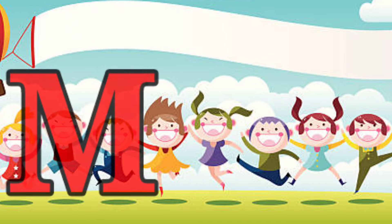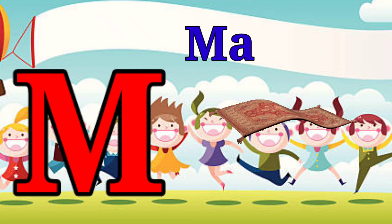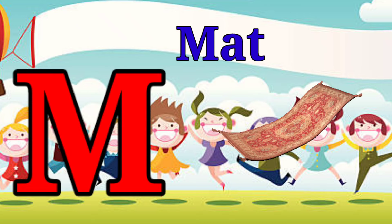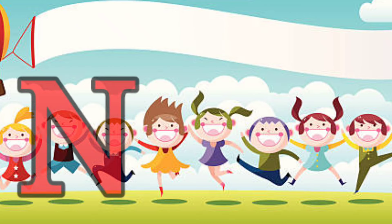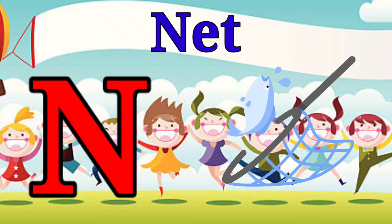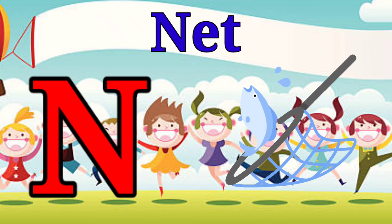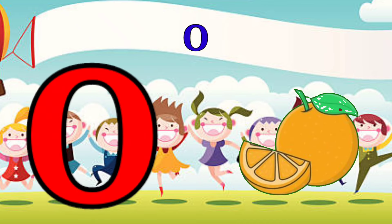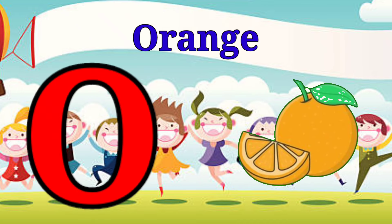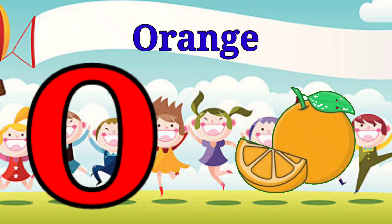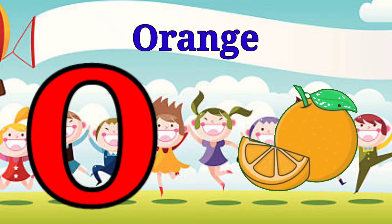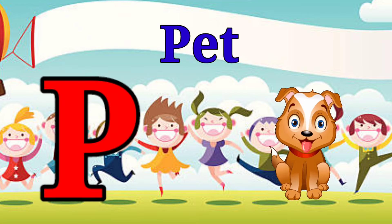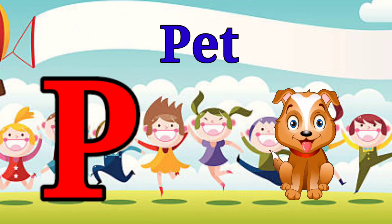M is for mat, m-m-mat. N is for net, n-n-net. O is for orange, o-o-orange. P is for pet, p-p-pet.